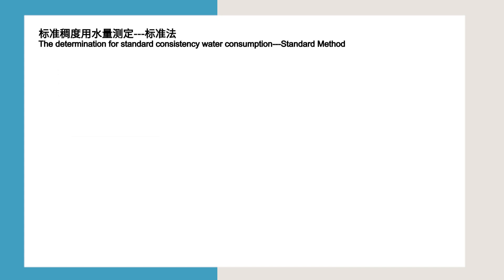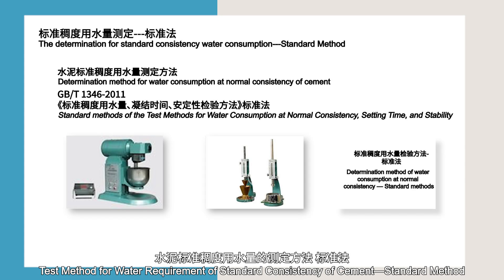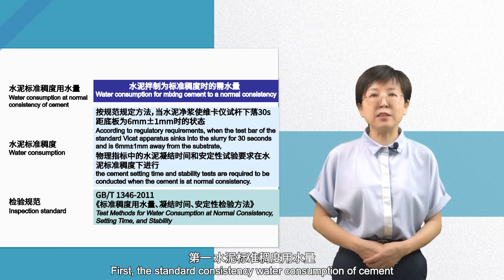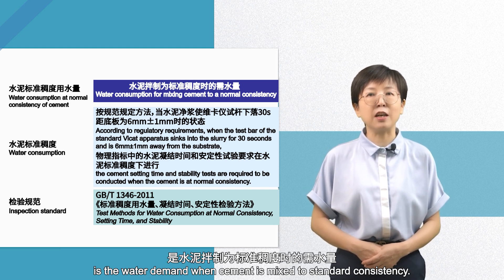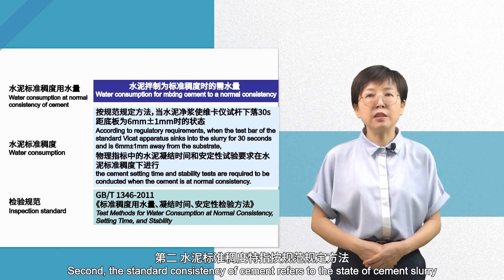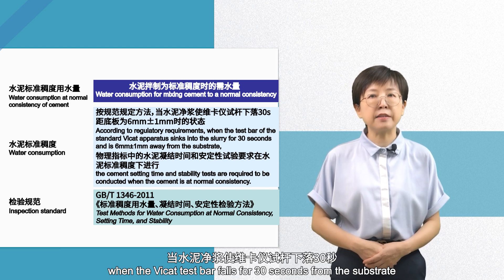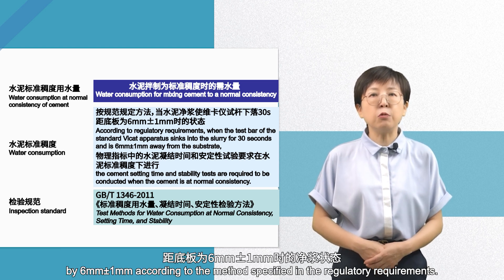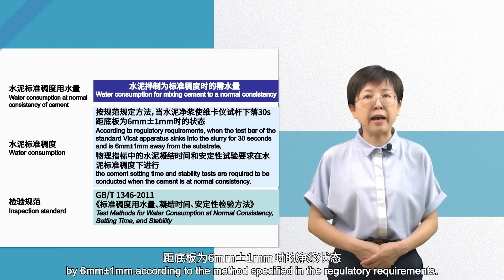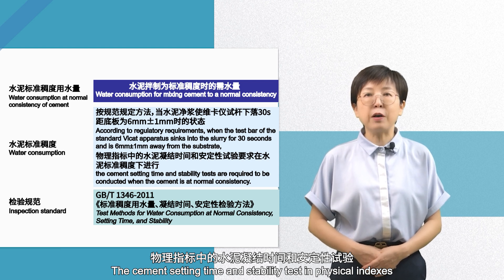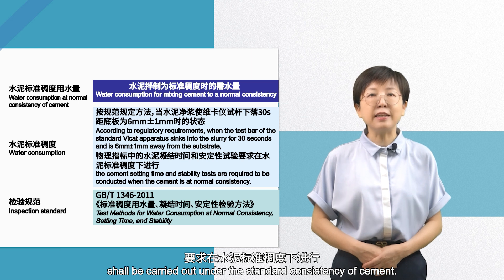The water required for cement with standard consistency is the standard consistency water consumption, expressed by a formula. To summarize: first, the standard consistency water consumption of cement is the water demand when cement is mixed to standard consistency. Second, the standard consistency of cement refers to the state of cement slurry when the VICAT test bar falls for 30 seconds from the substrate by 6 mm ± 1 mm according to the method specified in the regulatory requirements. The cement setting time and stability test in physical indexes shall be carried out under the standard consistency of cement.